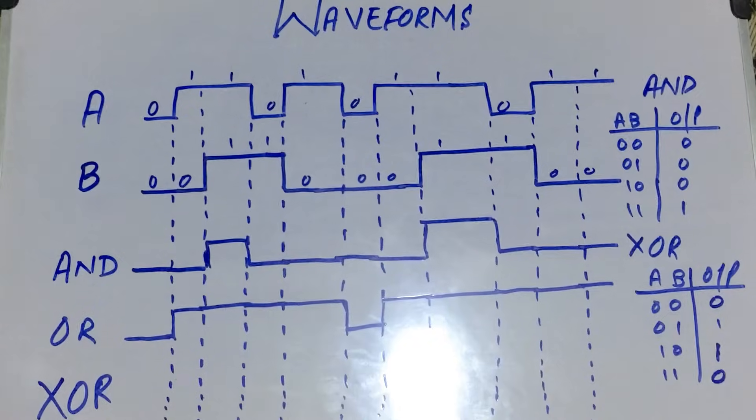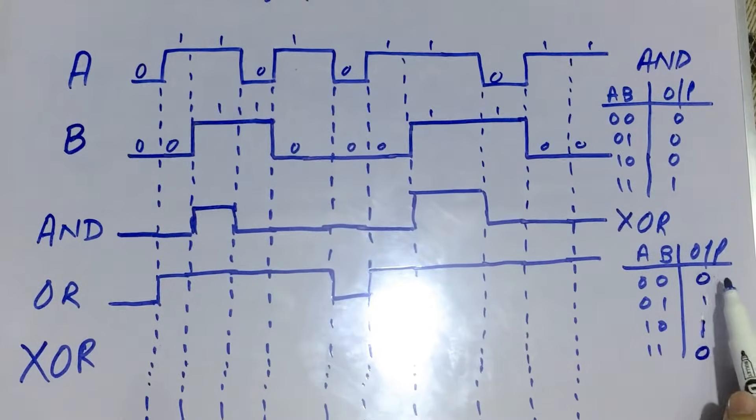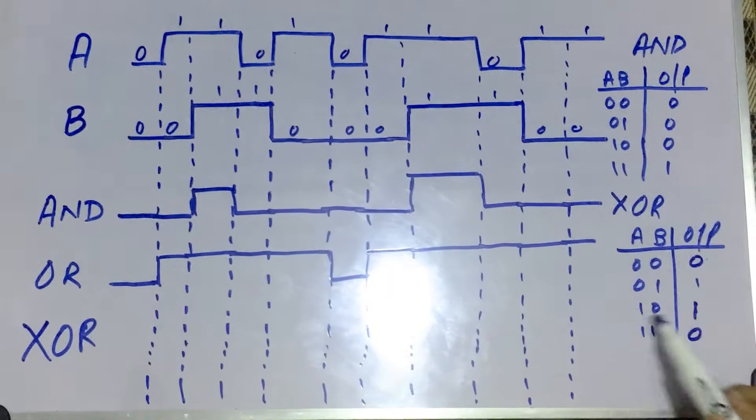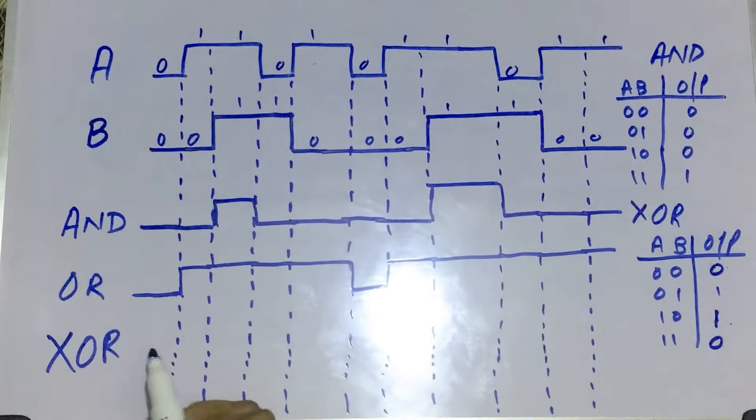Now we will make the waveform of XOR. In XOR, when both inputs are the same we have 0, and when the inputs are different we have 1. Here we have 0 and 0, so the output is 0.